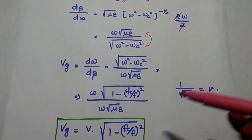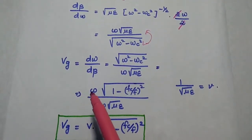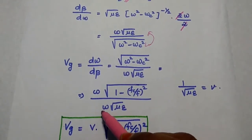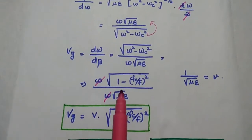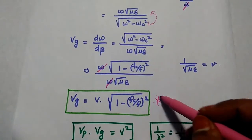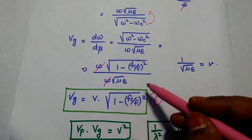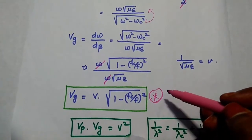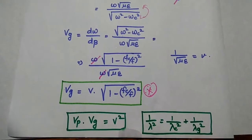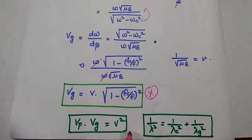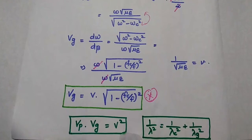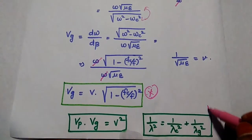Further simplifying by taking omega outside, we get omega into square root of 1 minus (fc by f) squared divided by omega into square root of mu epsilon. Omega and omega cancel, and 1 by square root of mu epsilon is velocity. Thus the group velocity equals velocity multiplied by square root of 1 minus (fc by f) squared. This is also an important formula. If you multiply phase velocity and group velocity, you get v squared — this is the relation between phase velocity and group velocity. Similarly, we can get the relation between cutoff wavelength and guided wavelength.